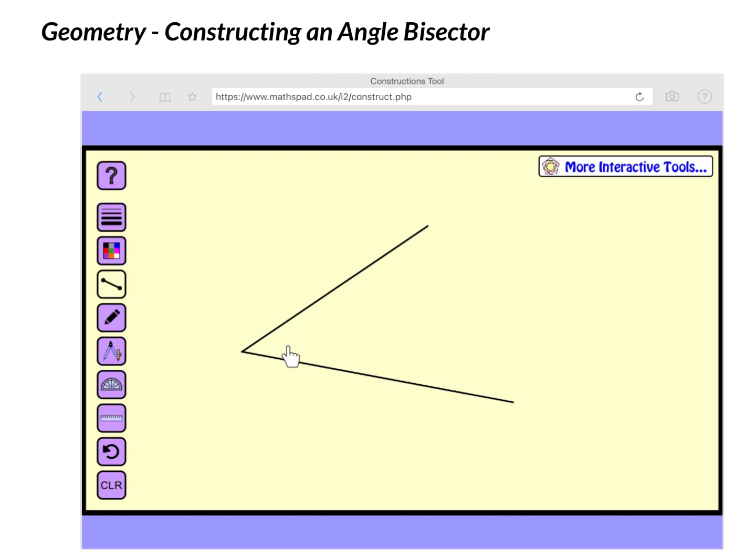The angle that we're talking about, we're going to bisect this. And remember, bisect just means to cut in half. So we want to create some segment in here that divides this angle in two.